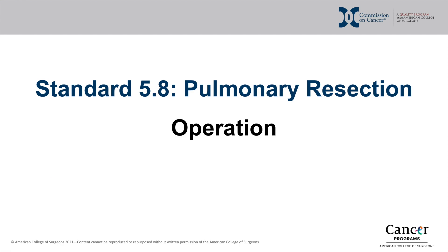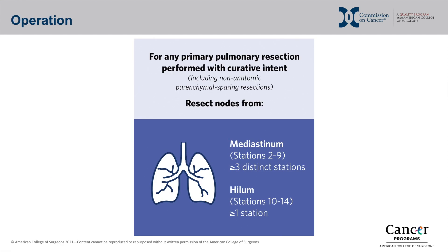We will now discuss the components of a compliant operation. This standard requires resection of nodes from at least three distinct mediastinal stations — stations 2 through 9 — and at least one hilar nodal station — stations 10 through 14 — for all curative intent pulmonary resections, including non-anatomic parenchymal resection.